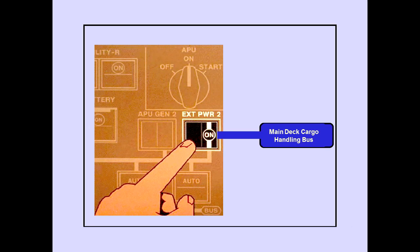The main deck cargo handling bus is powered automatically when either external power 2 or APU generator 2 is available. Selecting a power source on will de-energize the bus.